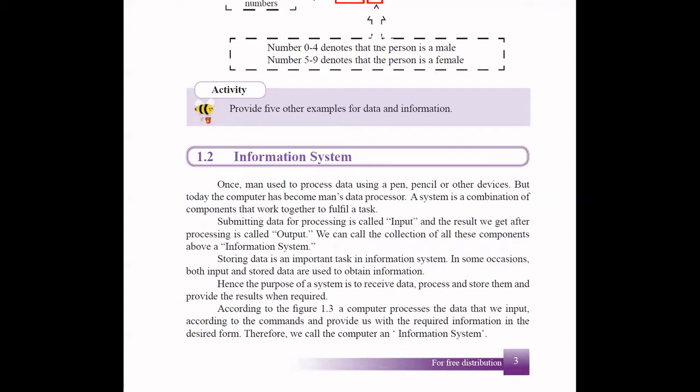In an information system, we have mainly three components: input, output, and processing. The collection of all these components we call an information system. For example, input means submitting data for processing. In a computer, keyboard and mouse are input devices because they're used to submit data for processing. After you do the processing, you will get an output using devices like printers or monitors to get the results.